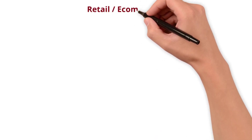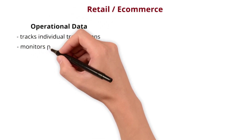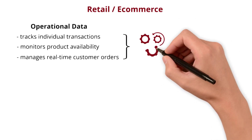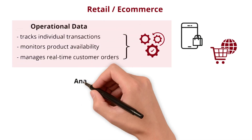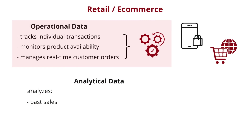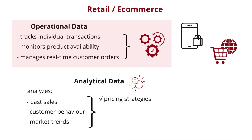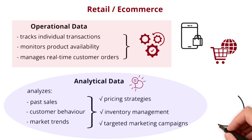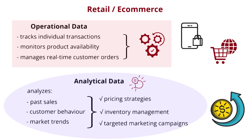In a retail and e-commerce setting, operational data tracks individual transactions, monitors product availability, and manages real-time customer orders, ensuring seamless execution in the dynamic and fast-paced online retail environment. Meanwhile, analytical data analyzes past sales, customer behavior, and market trends, providing strategic insights that guide pricing strategies, inventory management, and targeted marketing campaigns — optimizing overall business performance in the retail e-commerce landscape.